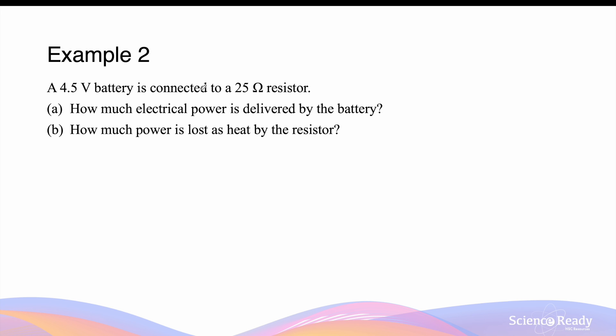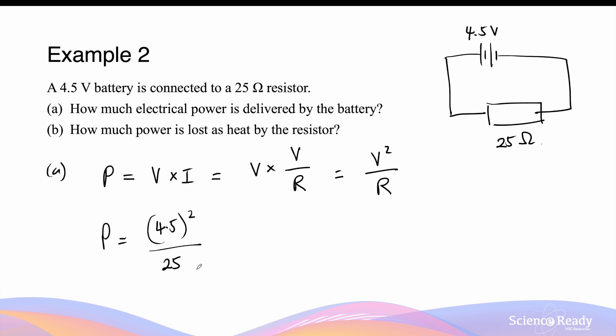A 4.5 volt battery is connected to a 25 ohm resistor. So the battery is connected to a resistor of 25 ohms. The battery is 4.5 volts. How much electrical power is delivered by the battery? We know that the original equation for power is V times I, but we can also use Ohm's law and replace the current here with voltage divided by the resistance, in which case we'll get V squared over R. So the power delivered by the battery will be equal to 4.5 volts squared divided by the total resistance of the circuit, which we assume to be 25 ohms.